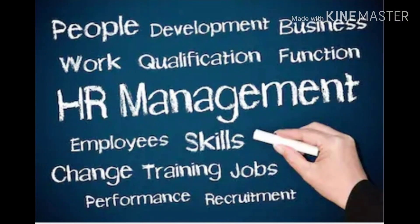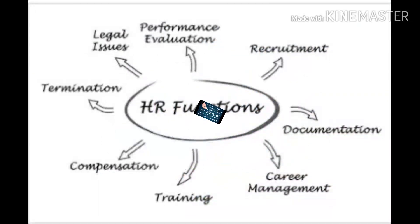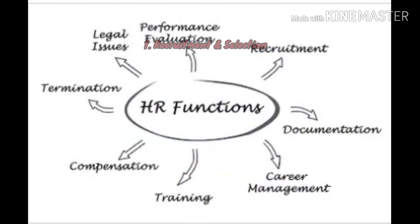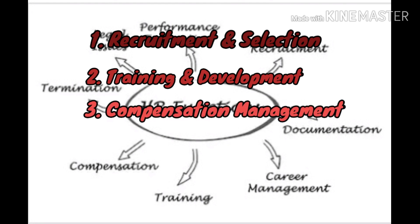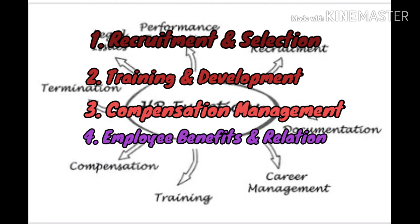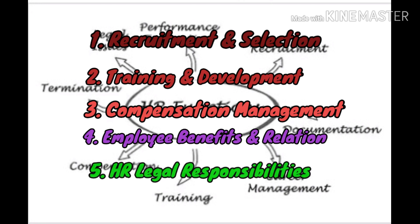Now it's time to summarize the session. We started with what is human resource management, with two simple definitions. Then we moved to HR major functions: first, recruitment and selection; second, training and development; third, compensation management; fourth, employee benefits and relations; and the final one, HR legal responsibilities.